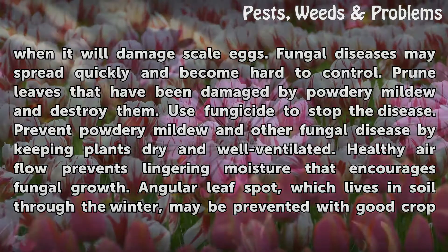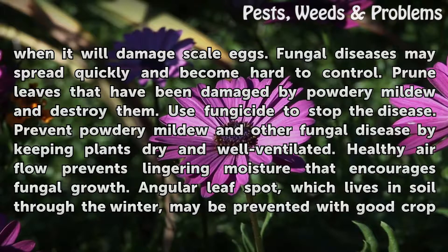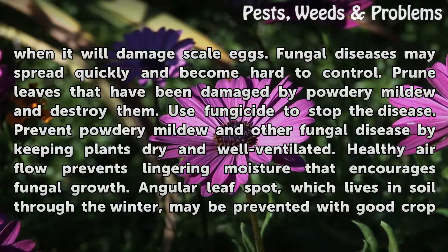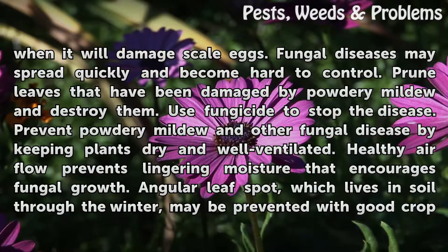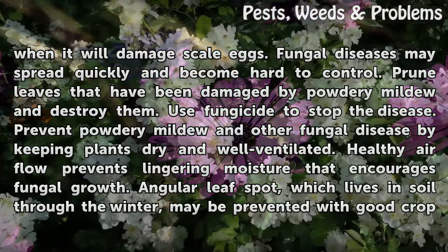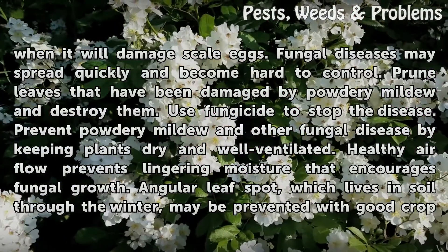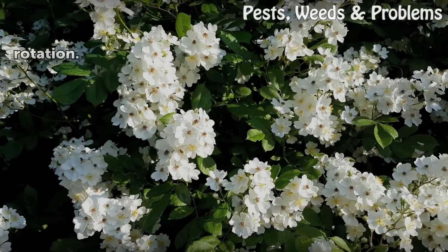Fungal diseases may spread quickly and become hard to control. Prune leaves that have been damaged by powdery mildew and destroy them. Use fungicide to stop the disease. Prevent powdery mildew and other fungal disease by keeping plants dry and well ventilated. Healthy air flow prevents lingering moisture that encourages fungal growth. Angular leaf spot, which lives in soil through the winter, may be prevented with good crop rotation.